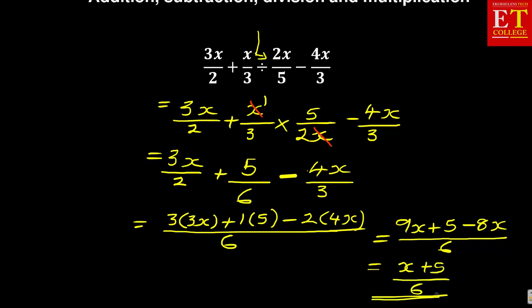So this becomes your final answer. In this case, I collected 9x and 8x, they all have x, and 9 minus 8 equals 1, which is 1x. And then plus 5 over 6. So then this becomes the solution to this problem.